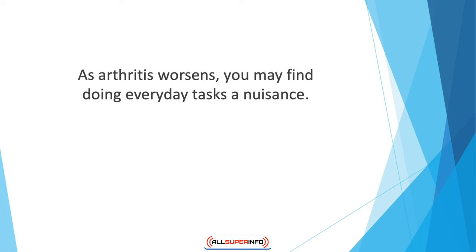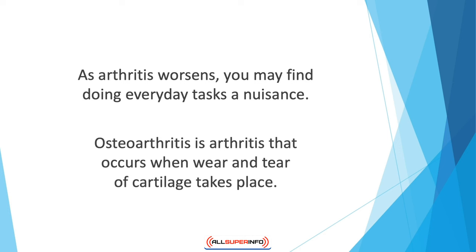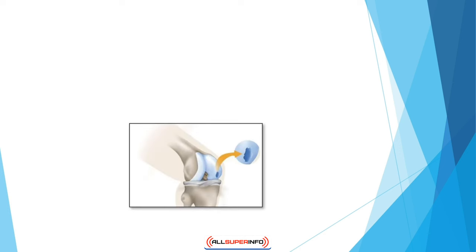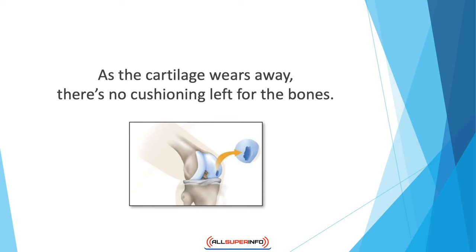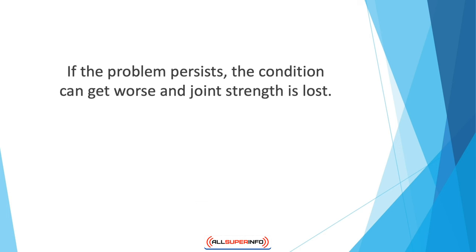Symptoms can range from mild and moderate to severe. As arthritis worsens, you may find doing everyday tasks a nuisance — inability to climb stairs or bend down is common. Osteoarthritis occurs when wear and tear of cartilage takes place. Being the most common type of arthritis, it is characterized by excessive pain and stiffness. As the cartilage wears away, there's no cushion left for the bone, so bones run against each other, causing discomfort.